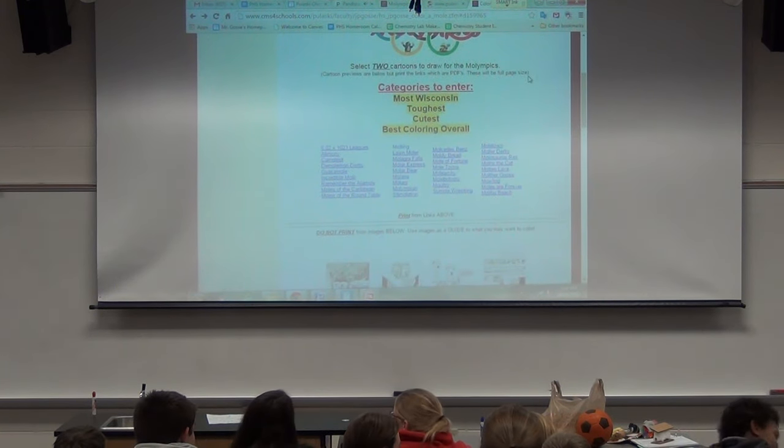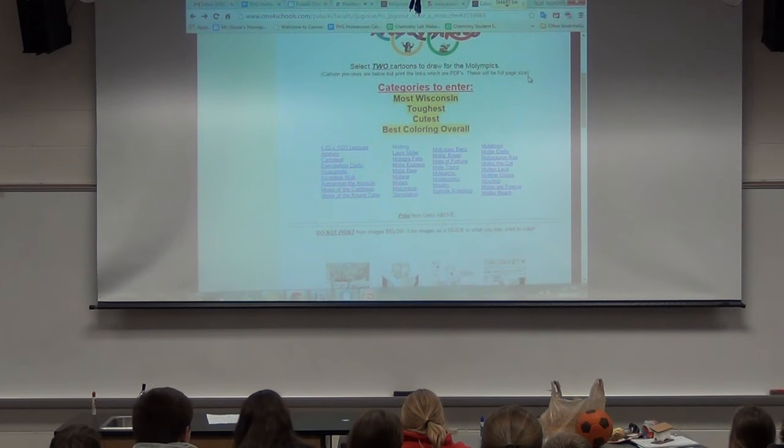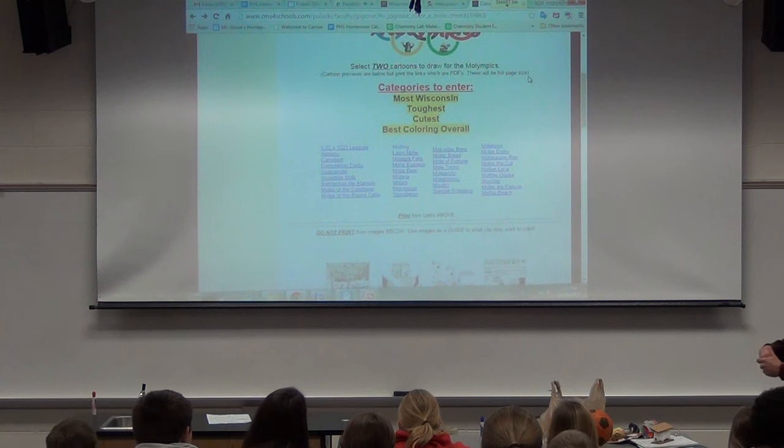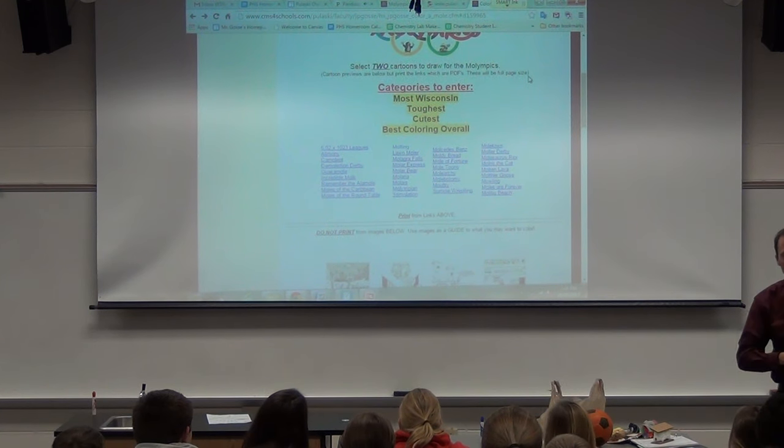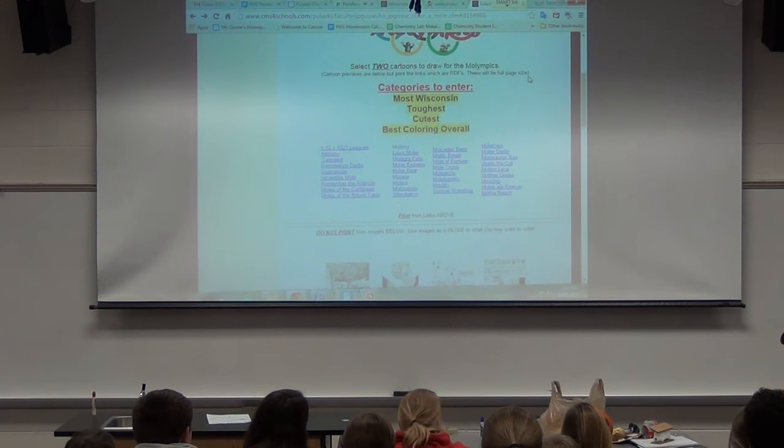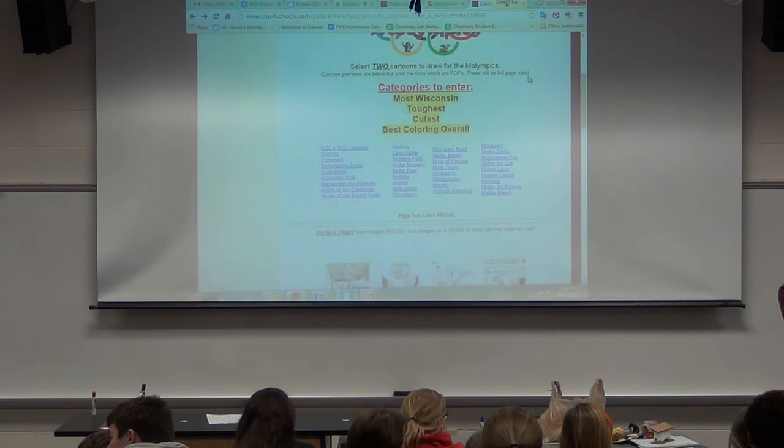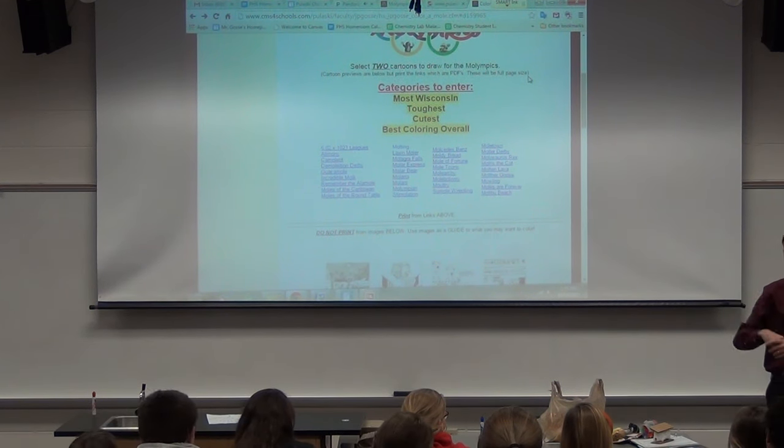Here's your last item, and I'm done with this. You have four different options. You can make it most Wisconsin. So, I saw some funny things with bears and viking stuff, or badgers and whatever. You can make it tough. You can make it really cute, or you can just be really good at coloring it. Again, those are the categories that you can enter if you would like. That is due next Friday, by next Friday. So, yeah, you can enter two. You can enter two of those. Because you have to color two pictures.